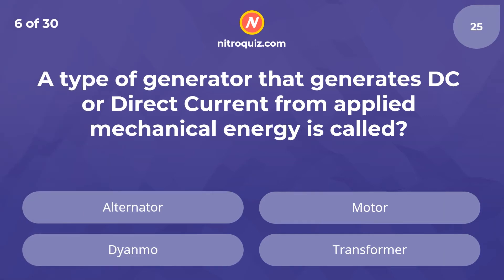A type of generator that generates DC or direct current from applied mechanical energy is called? Answer is Dynamo.